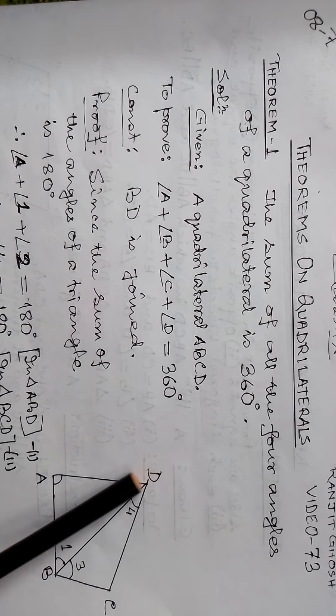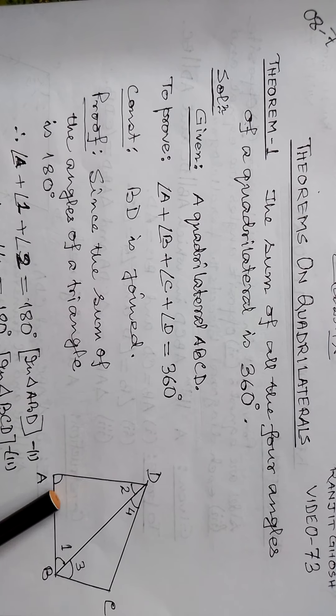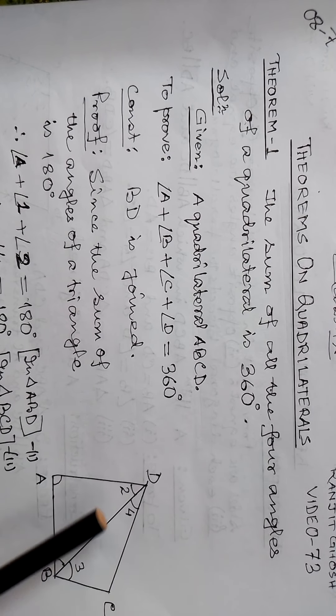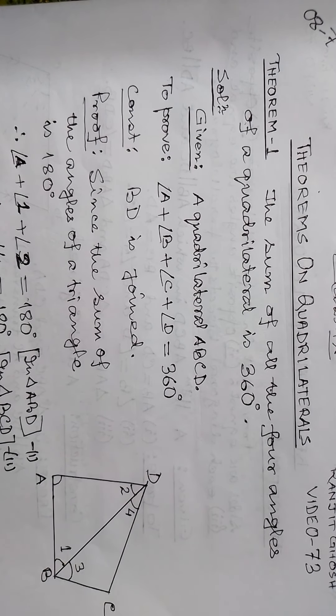ABCD is a quadrilateral. This is a small angle. This is 360 degrees.